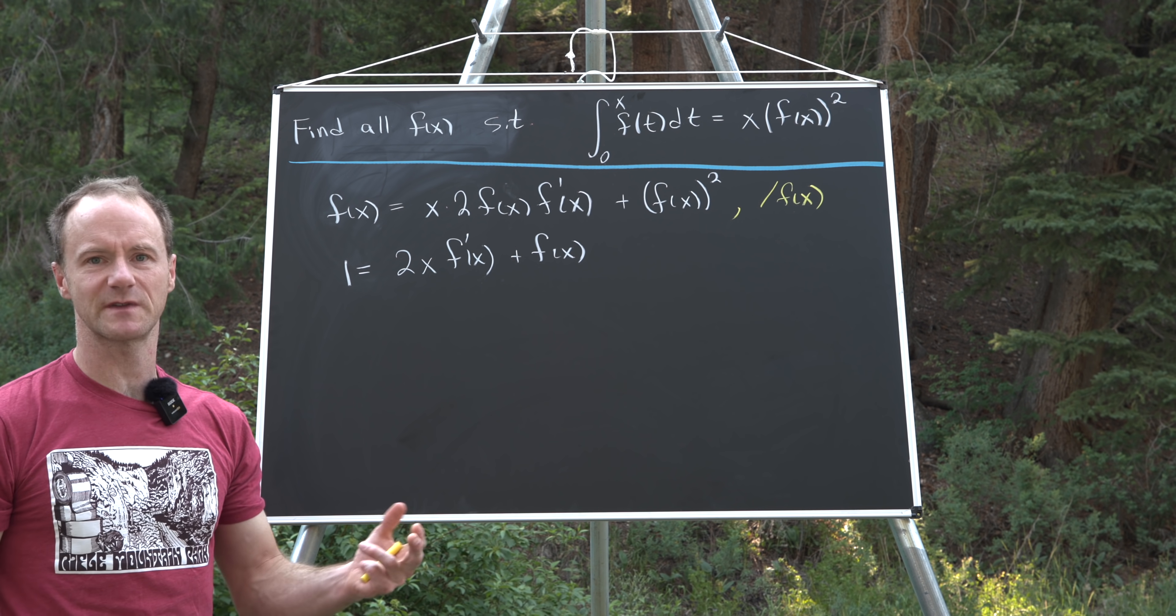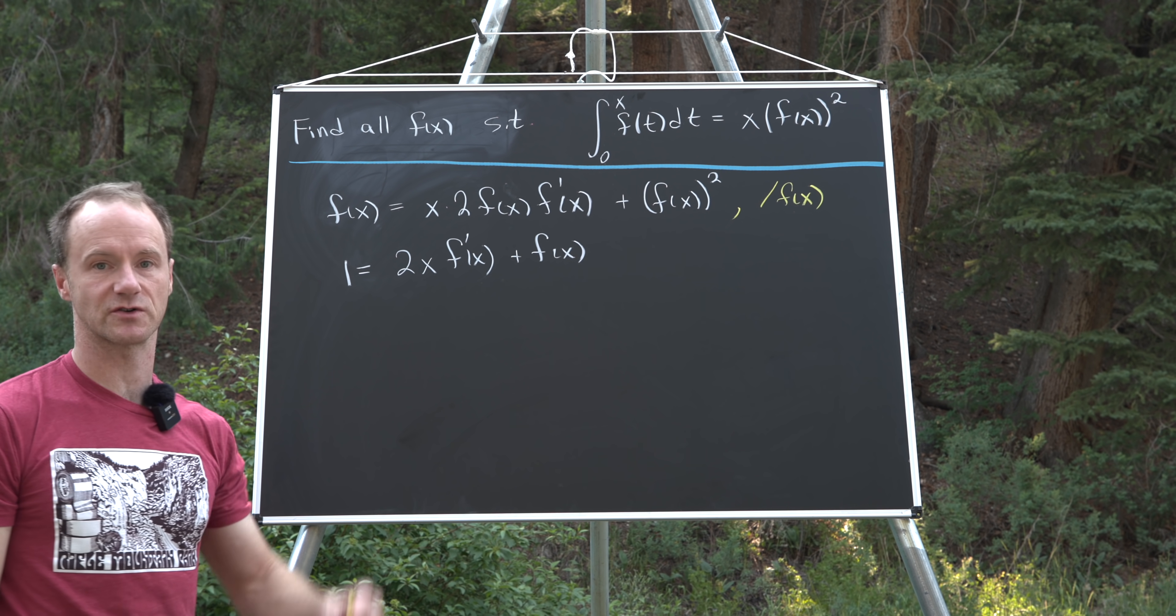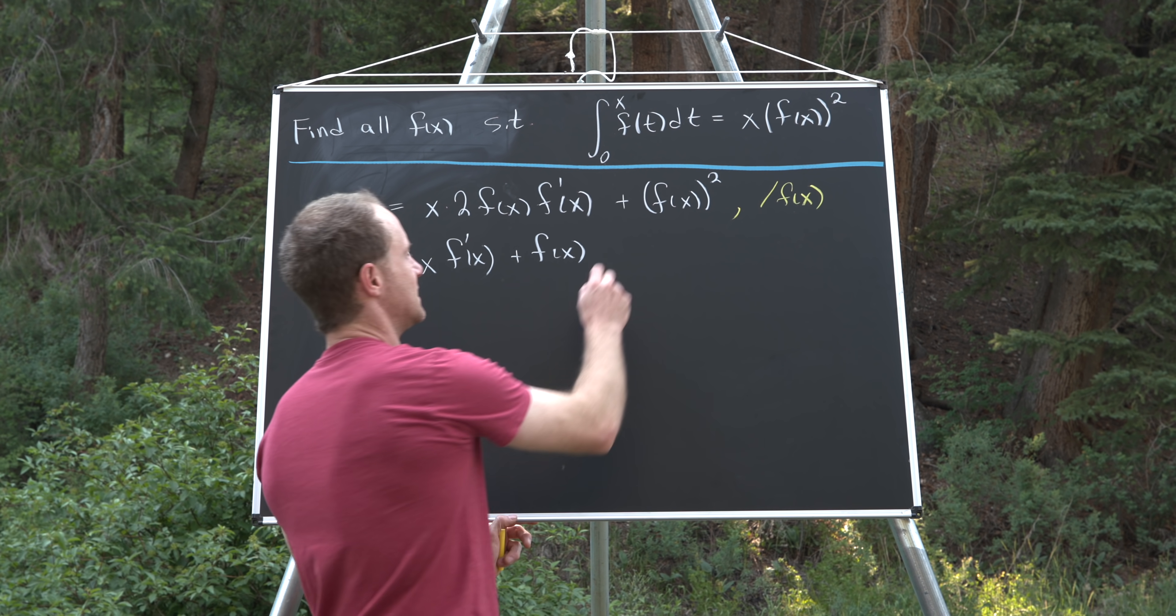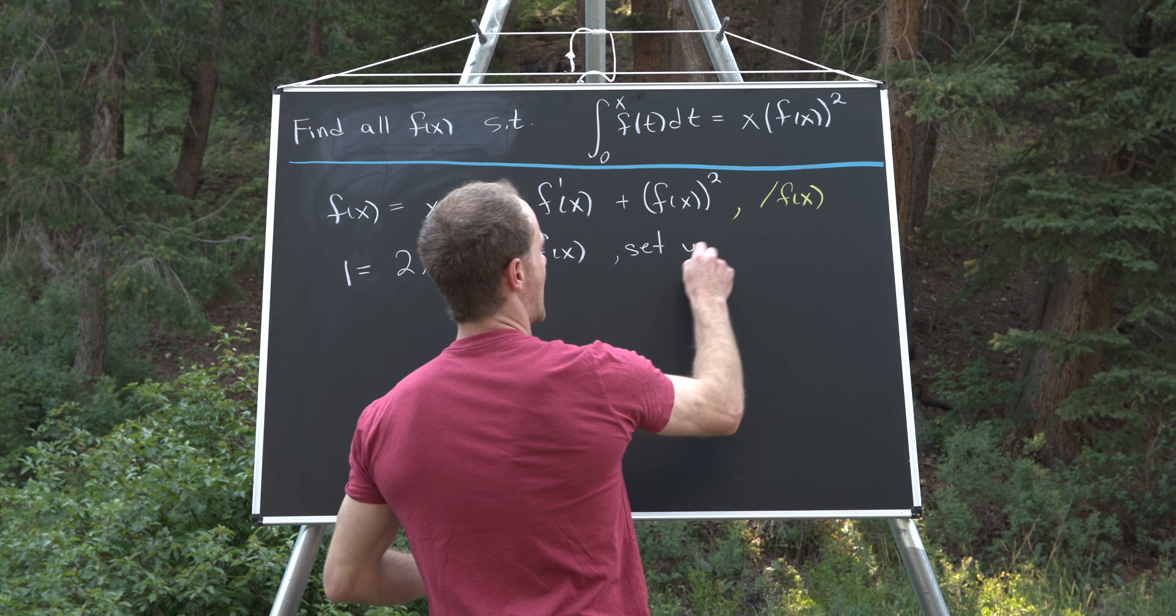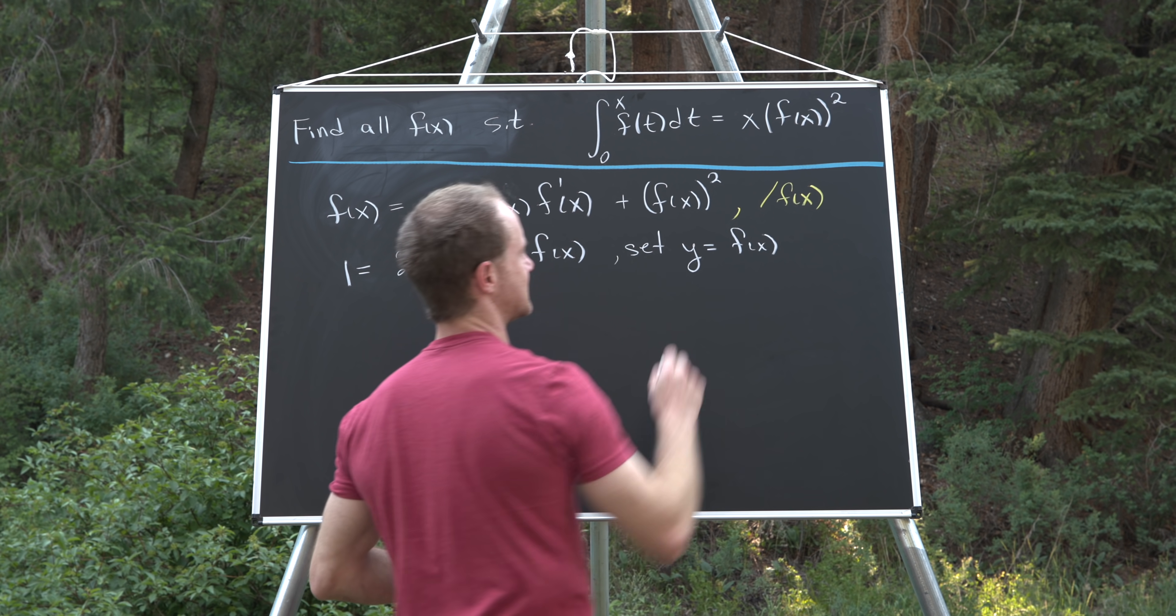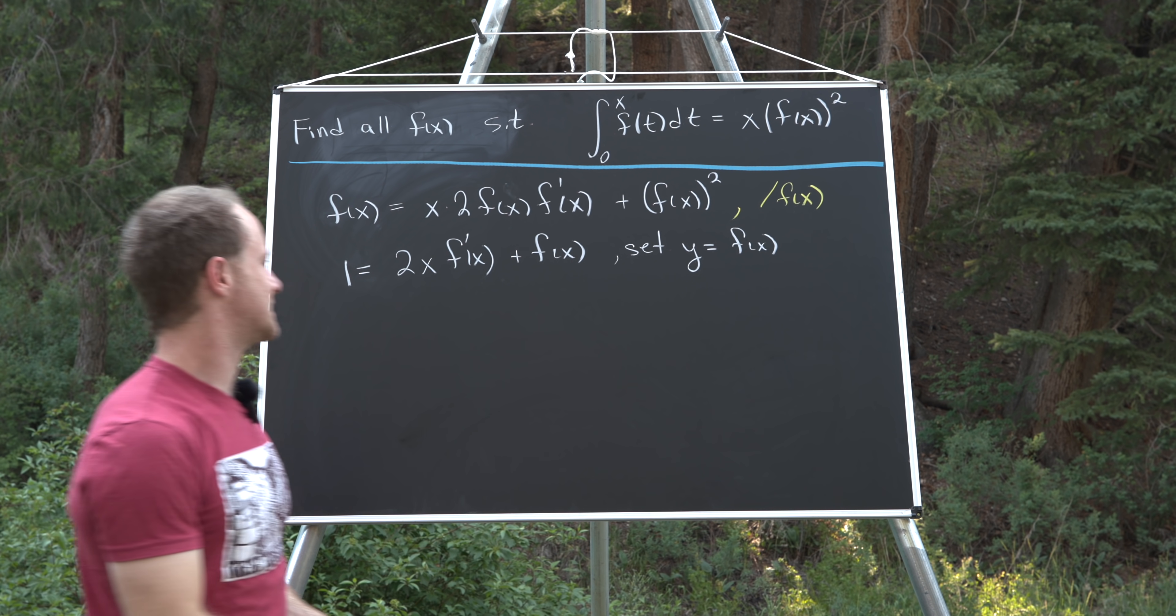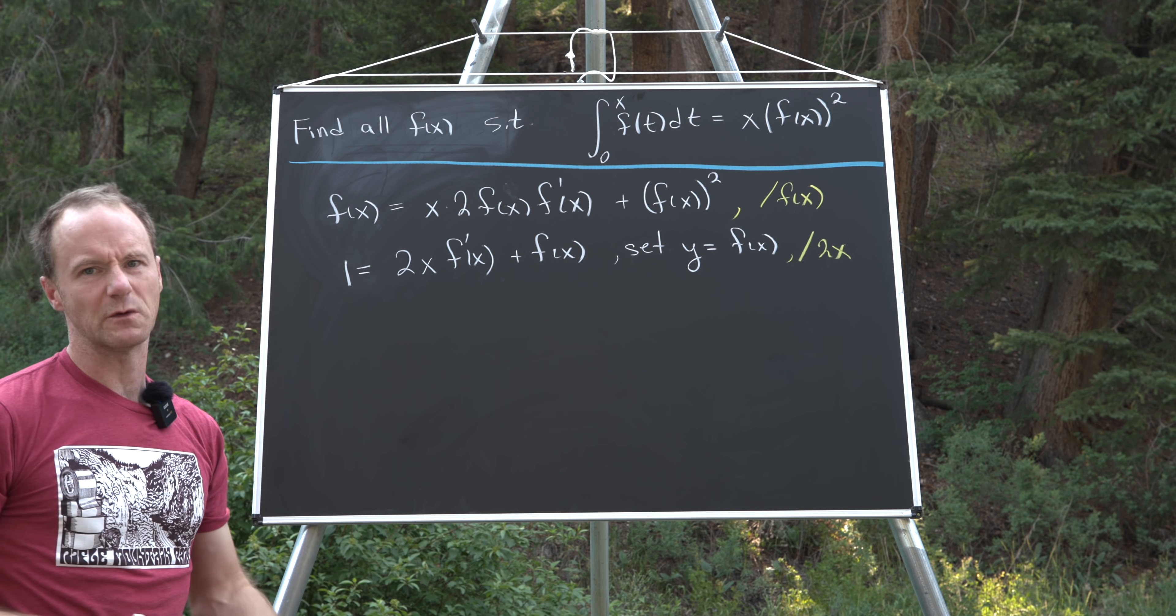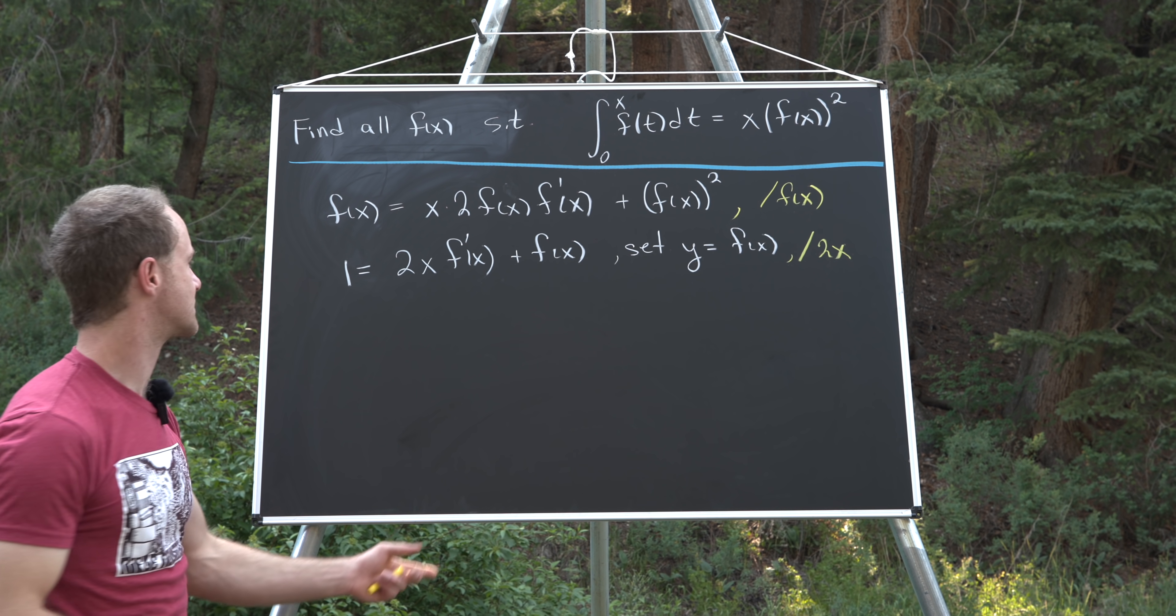And now we've got something called a first order linear differential equation. In order to make it look like one that you might see in a textbook, let's maybe go ahead and set y equal to f of x, and then also divide by 2x. We'll see why we want to do that once we get around to it.